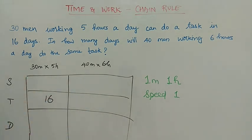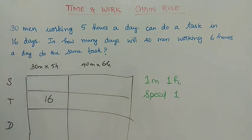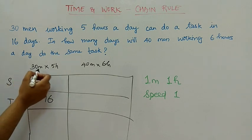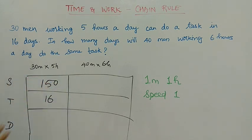One man, one half — so 30 into 1, 30 into 5 into 1, so 5 into 1 is 5. That is not 15 — the total work is 150. Correct? So this is the number of total work.